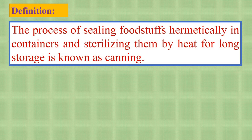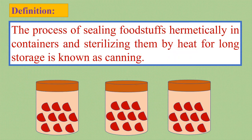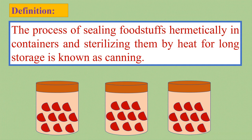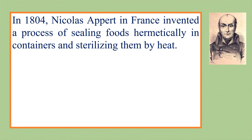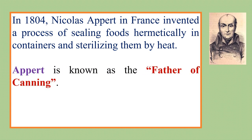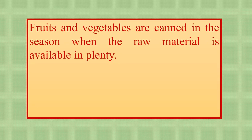Let us understand the definition of canning. It is the process of sealing foodstuffs hermetically in containers and sterilizing them by heat for long storage. As far as history of canning is concerned, in 1804 Nicolas Appert in France invented this process. Appert is known as the father of canning, and in honor of the inventor, canning is also known as 'appertizing'.